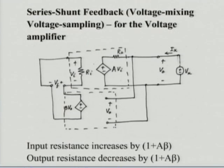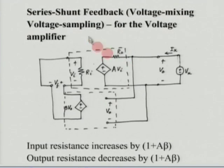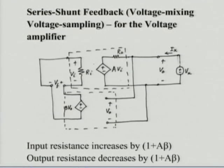So in a voltage amplifier, the input resistance increases by (1 + Aβ) and the output resistance decreases by (1 + Aβ). Another way of arguing: whenever we have a series connection at the input, the input resistance goes up by (1 + Aβ) — we get a series connection when we have a voltage there. Whenever you have a shunt connection at the input, the input resistance goes down by (1 + Aβ). The same rule applies to the output.